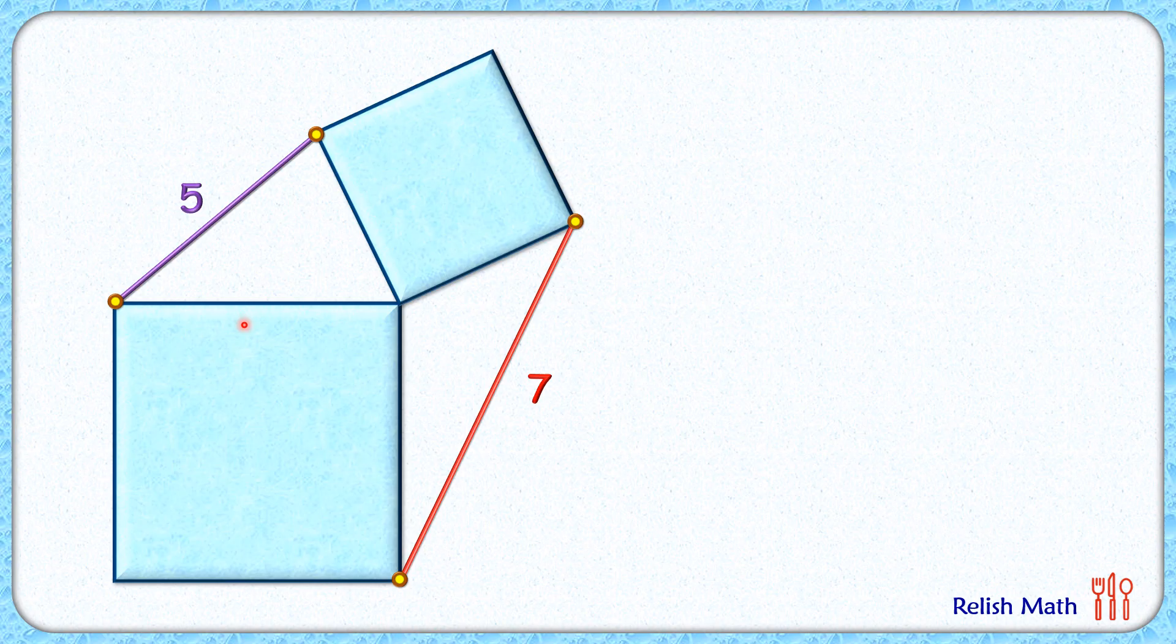the side length of this square as a centimeters, and for this square it's b centimeters. Let's assume this angle here is alpha degrees. Now applying the angle sum property around a point, where these two angles are 90 degrees, we'll find that this remaining angle here is 180 minus alpha.